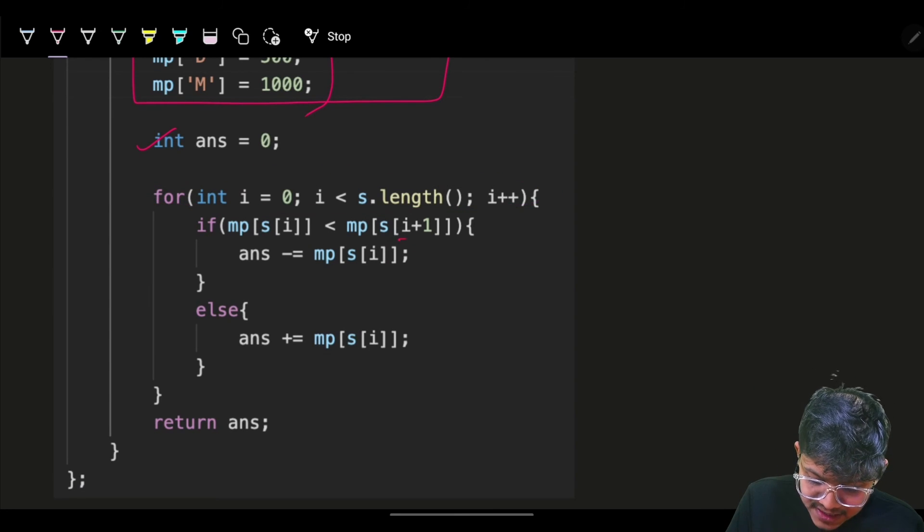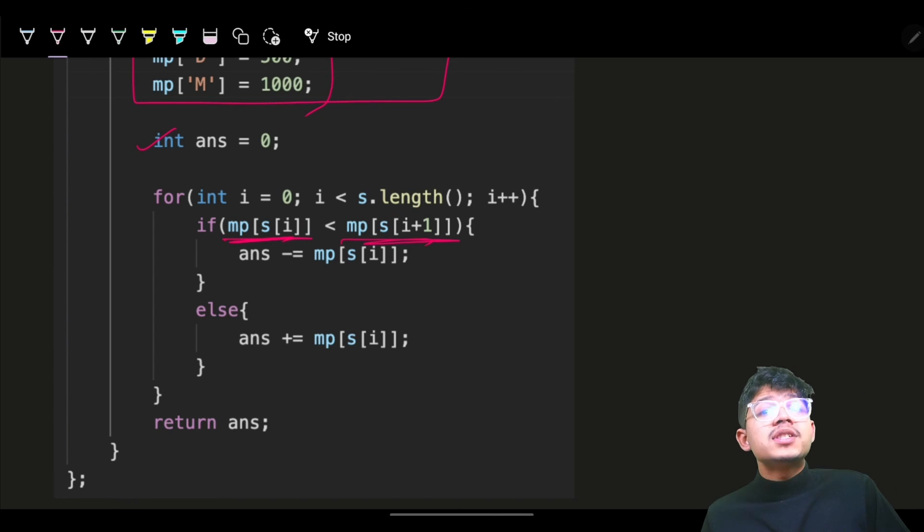I'll check for the next element, which is i+1. I'm at i, I check for i+1. Corresponding to the Roman numeral, I get its integer value. If I am less than the next number, I have to be subtracted, so the value will be subtracted. Else, the value will be added.